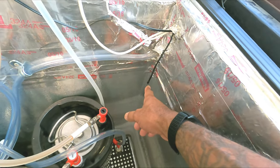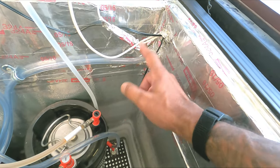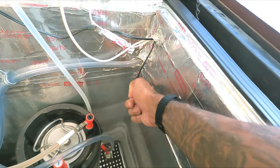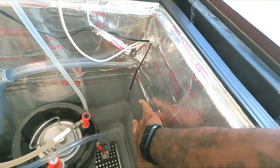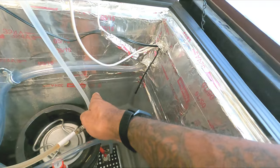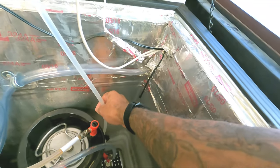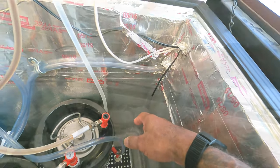This is the temperature probe that runs to the Inkbird controller. You want to make sure that this isn't touching anything. You'll see I have this coming in through the wall here and just draped. You want this to hang loose in the air. If it touches a wall or if it touches a keg or a line or something like that, it's not going to give you an accurate reading on the actual temperature that's in here.